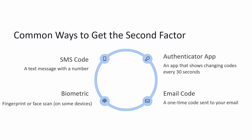What are the common ways to get the second factor? First is SMS code — a text message with a number. Second is an authenticator app — an app that shows changing codes every 30 seconds. Third is email code — a one-time code sent to your email. Fourth is biometric — fingerprint or face scan on some devices.